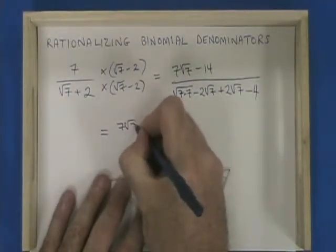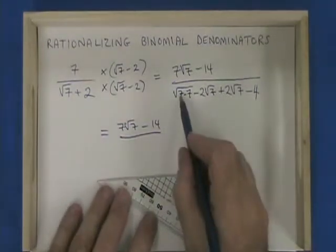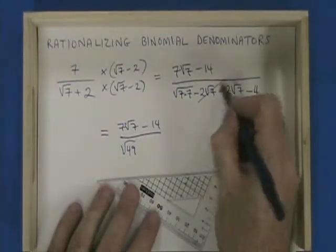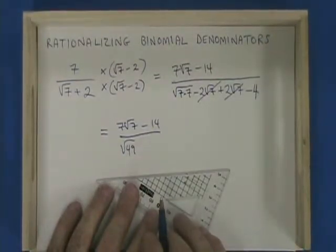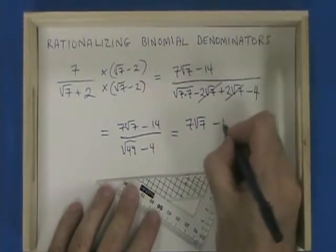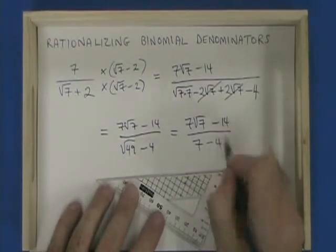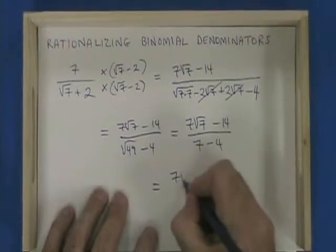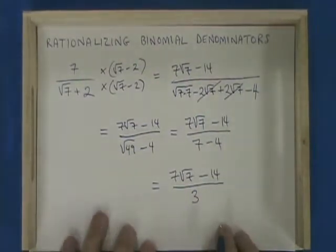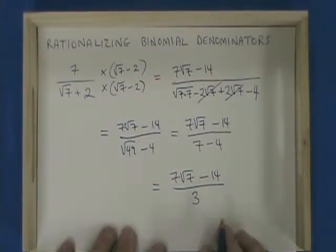We have 7 root 7 minus 14 as a numerator. The square root of 7 times 7 is the square root of 49. Minus 2 root 7 plus 2 root 7 cancels, and we have minus 4. The square root of 49 is 7, so we have 7 minus 4 in our denominator. And finally, 7 minus 4 is 3, so our final answer is 7 root 7 minus 14 as the numerator over 3, the denominator.